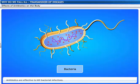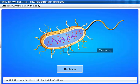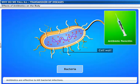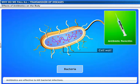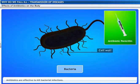For example, some bacteria make cell walls to protect themselves. The antibiotic penicillin blocks the cell wall synthesis. As a result, bacteria are unable to make cell walls and they die.